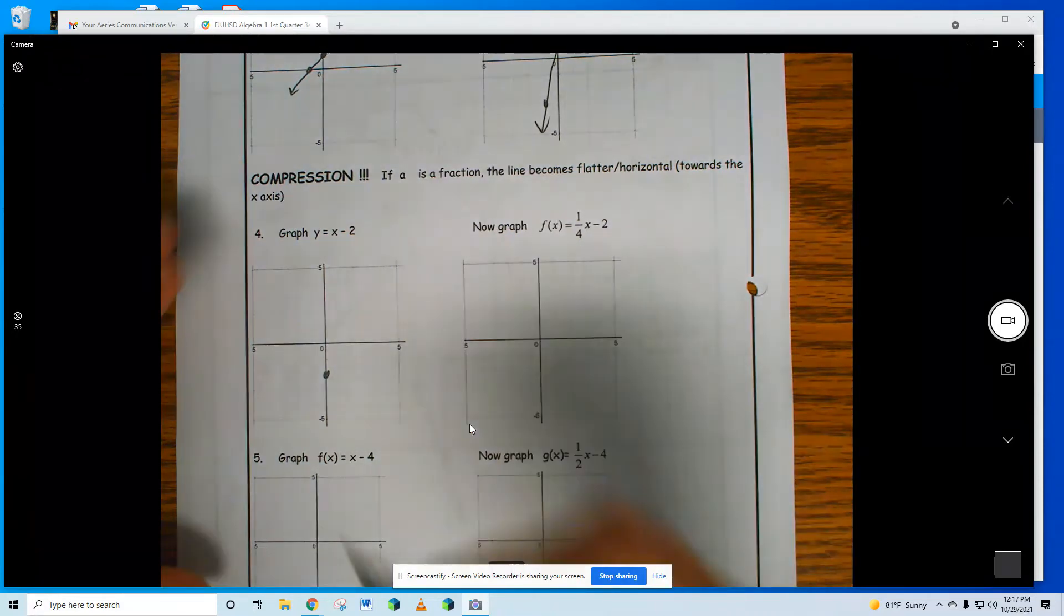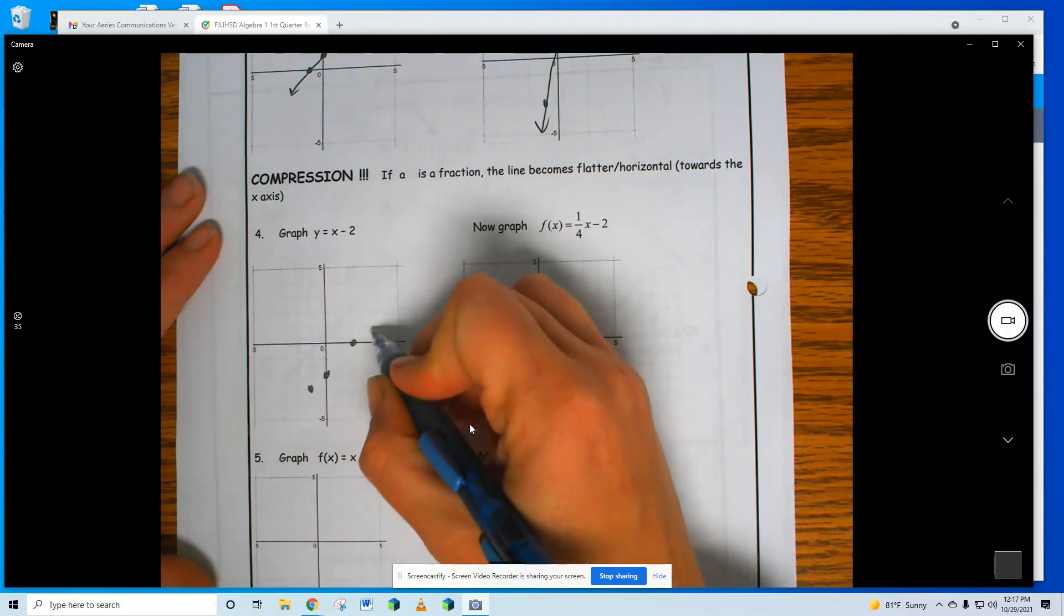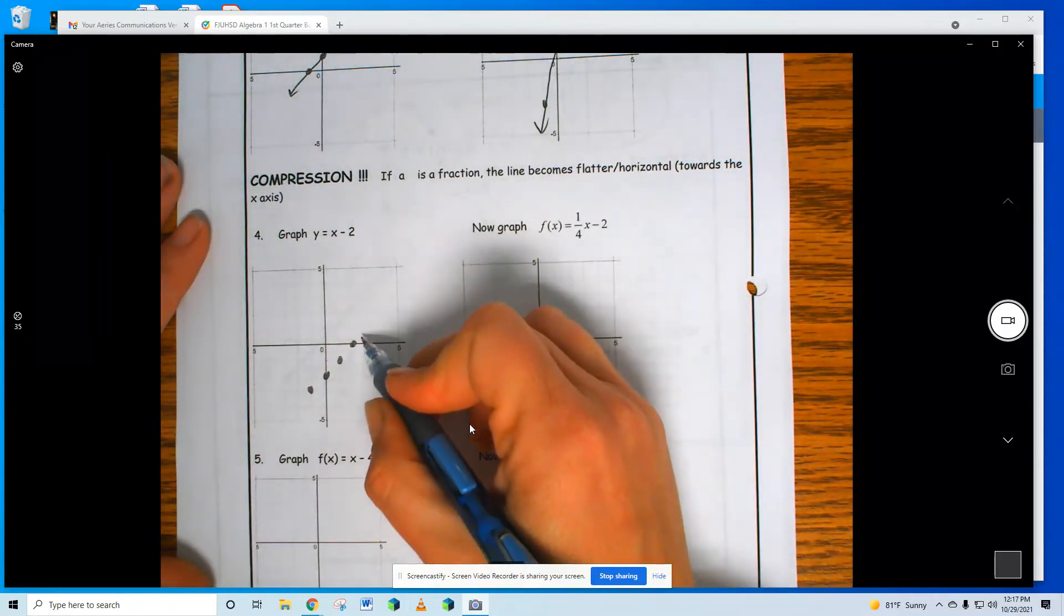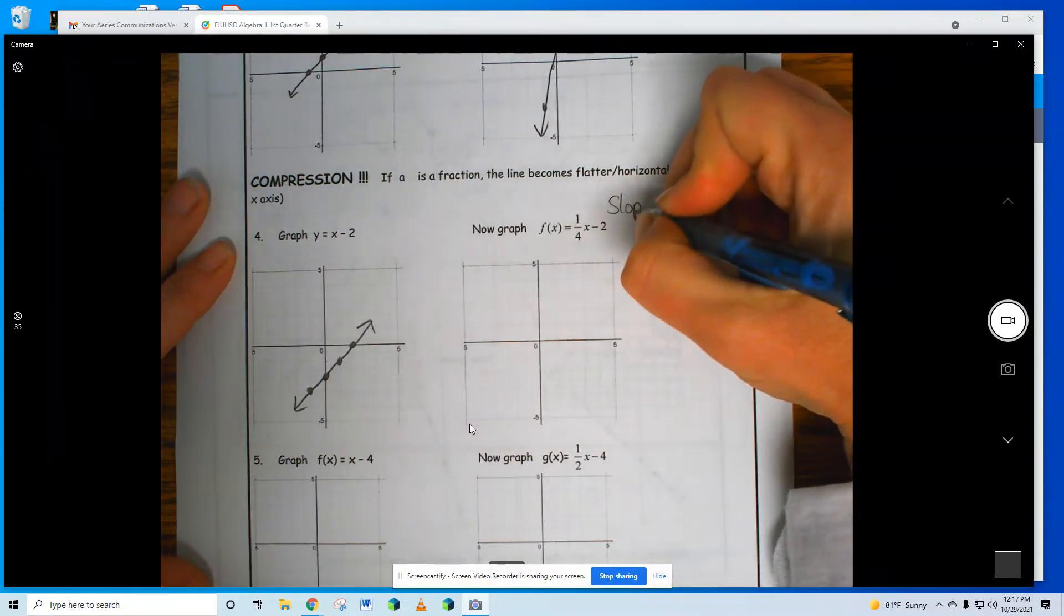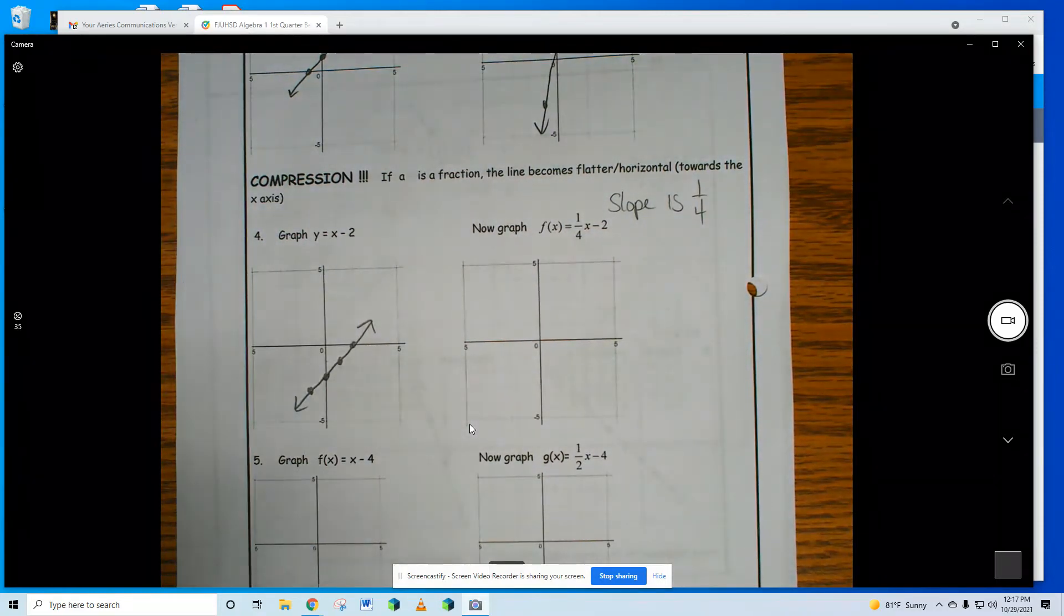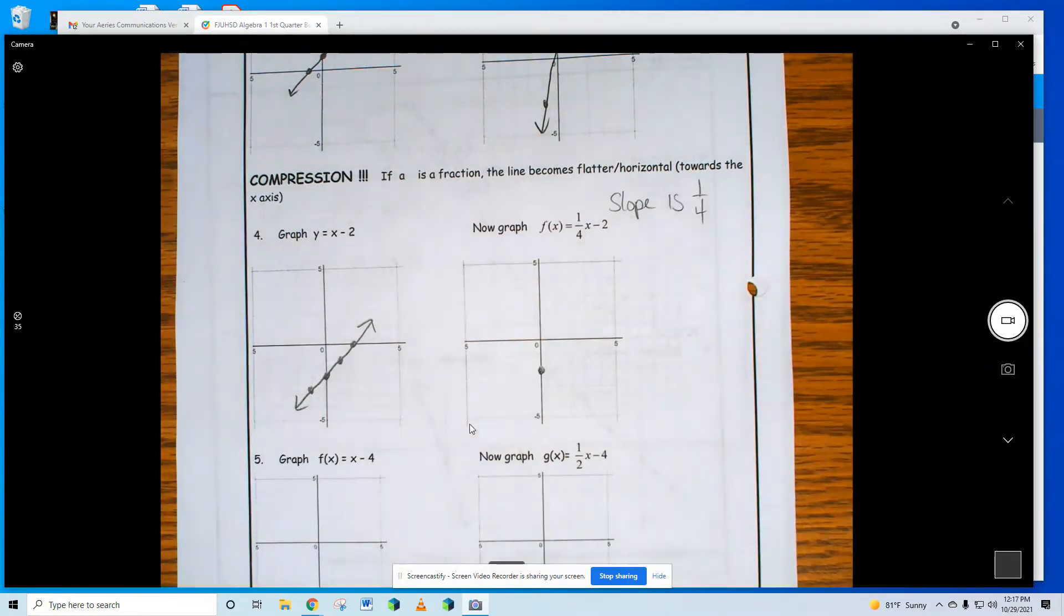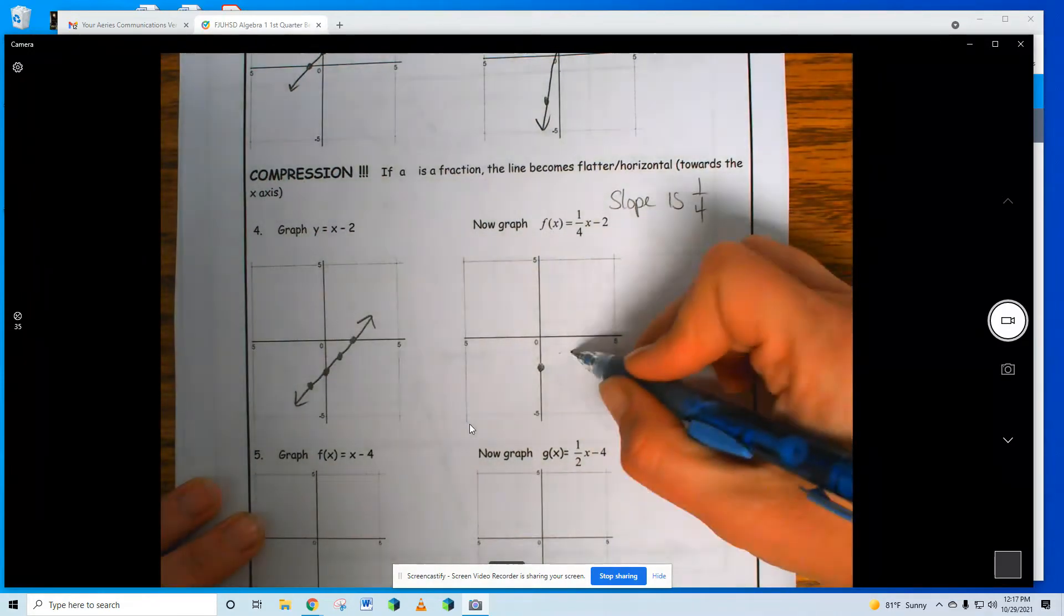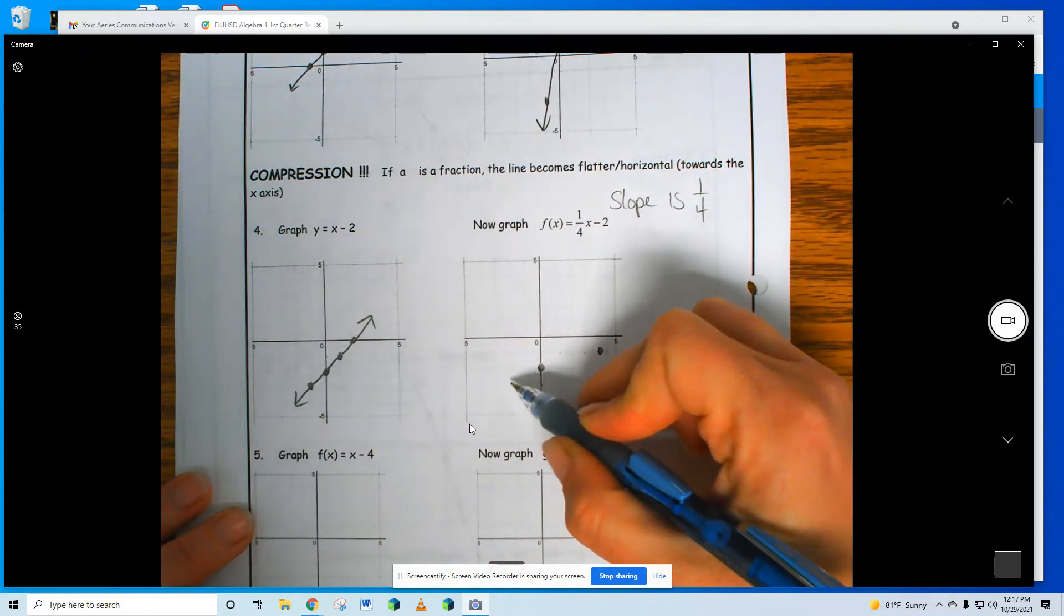I'm going to graph both of these, minus 2. Rise 1, run 1, rise 1, run 1. So graph the parent function or the original. Right, okay. Now if my slope is 1/4, so graph it as normal, begin at negative 2. And my slope is 1/4: rise 1, run 1, 2, 3, 4. Down 1, and then 1, 2, 3, 4.